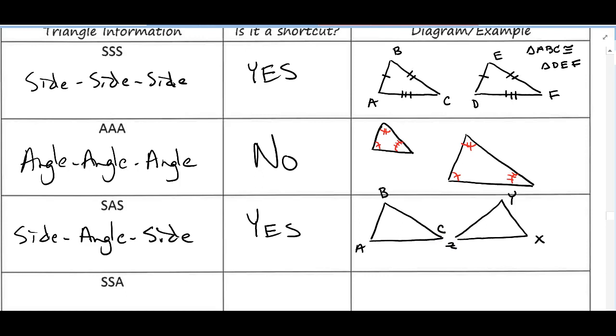And for side, angle, side, I'm going to pick two sides. So let's say AB and XY, and then BC and YZ. And the angle has to be right in between—that's angle B and angle Y.